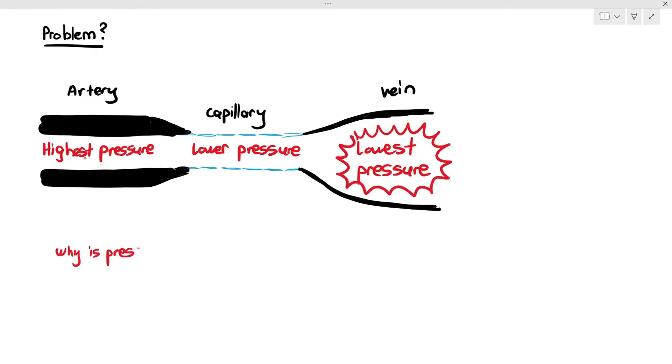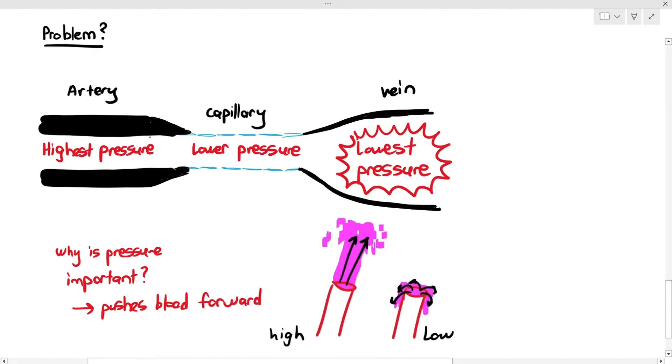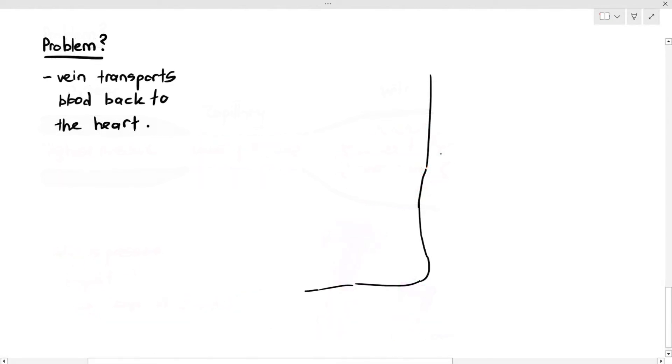Now, it poses a problem for the vein, because why is pressure important? Pressure is important because it is the force that pushes the blood forward. When there is a higher pressure, the blood gushes through the blood vessels quickly, but when the pressure is very low, it just trickles through with a lot of difficulty. What's the problem? If you remember, the function of the vein is to transport blood back to the heart.